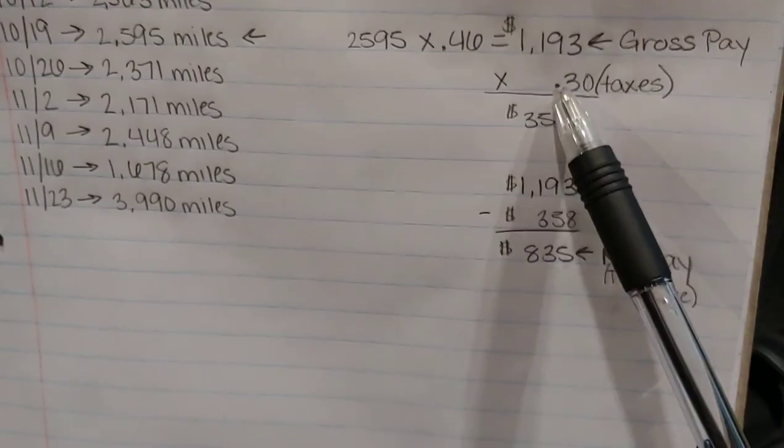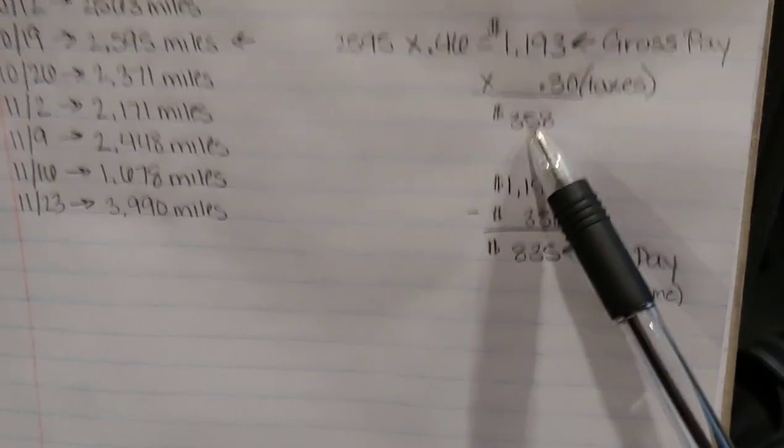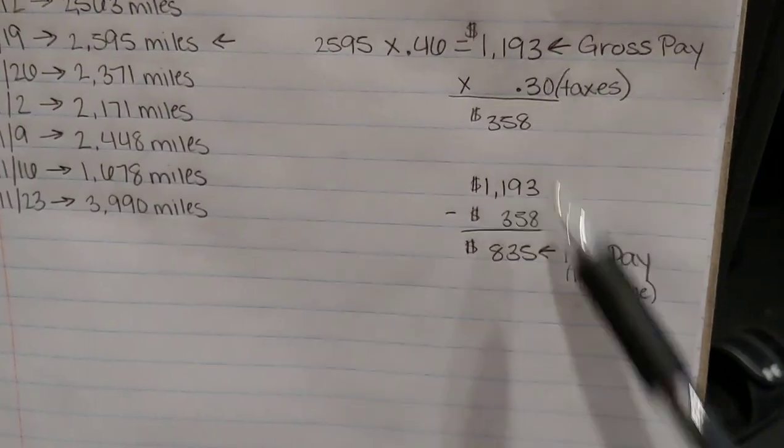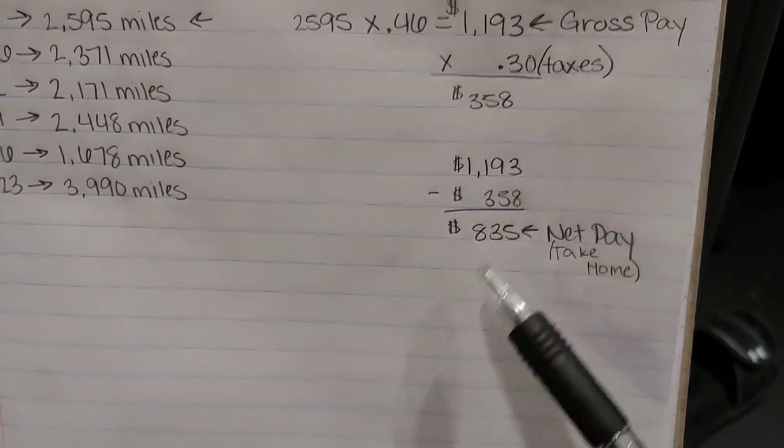So you're going to times it by 0.3 or 0.30 and it comes out to $358. That's what they're going to charge you in taxes. So you're going to want to take your gross pay and you're going to want to subtract your taxes.